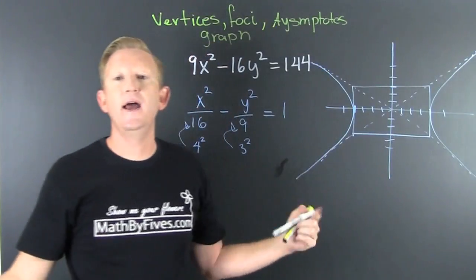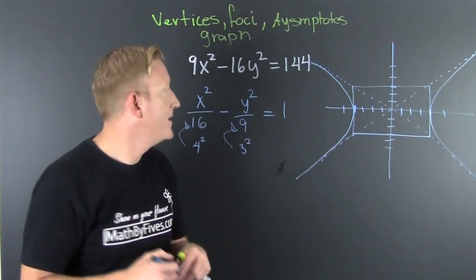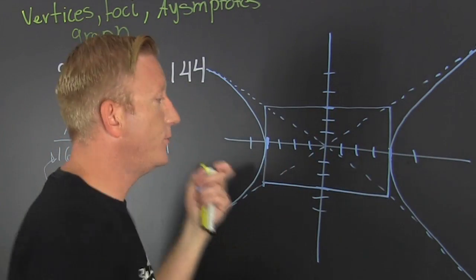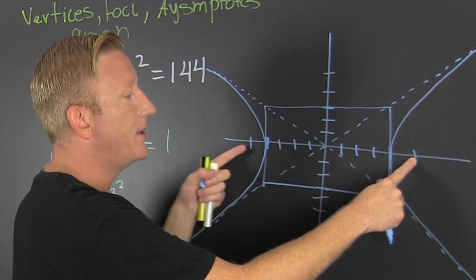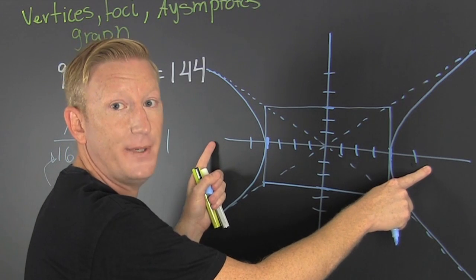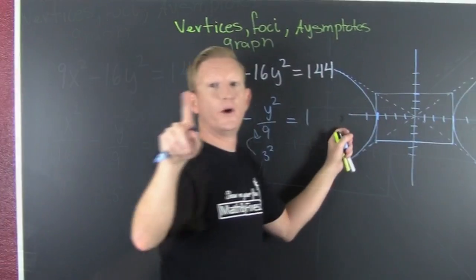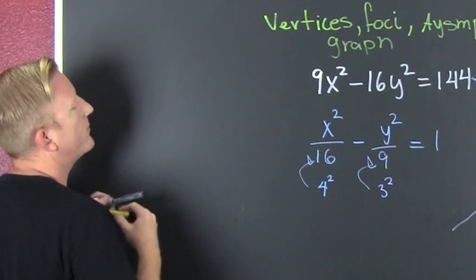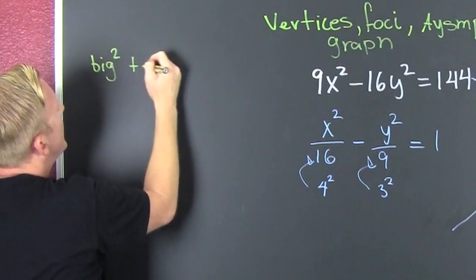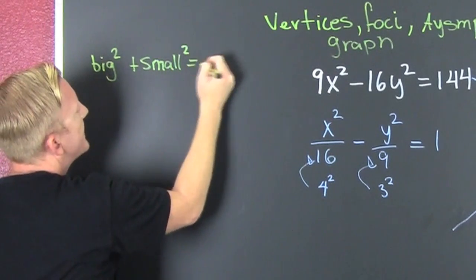So what else is in this video? I'm focused on finding the foci. The foci lie inside the cups of the hyperbola. So because it's inside — it's outside of the box — we need to add our big squared and our little squared, and that's going to be our c squared.